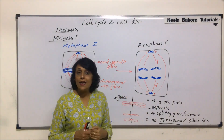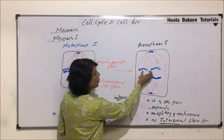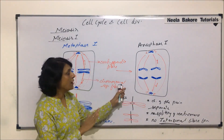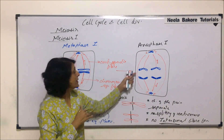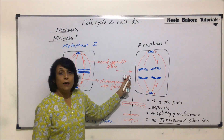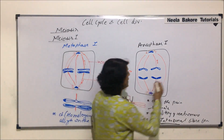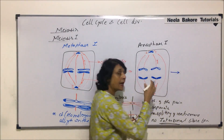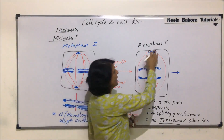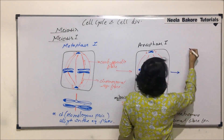We can draw early anaphase and late anaphase. Early anaphase is like this. By late anaphase, these chromosomes would have reached the poles. Now the chromosomes have reached up to the poles. This cell is going to enter the next phase — telophase 1 — which is again part of meiosis 1.